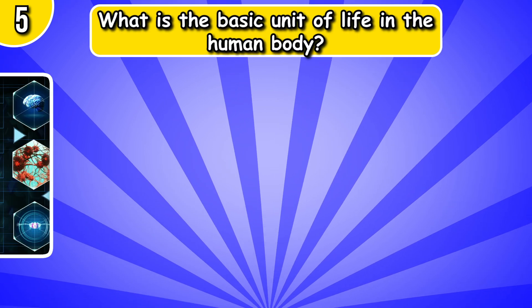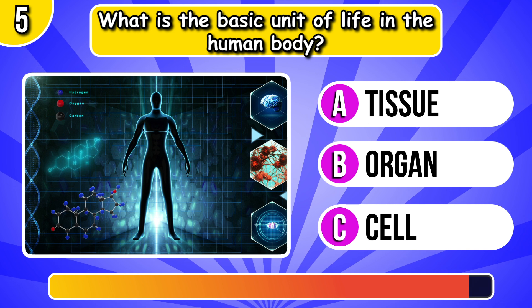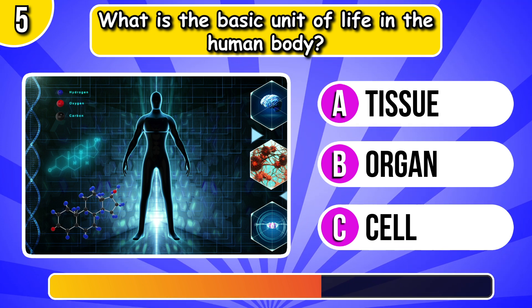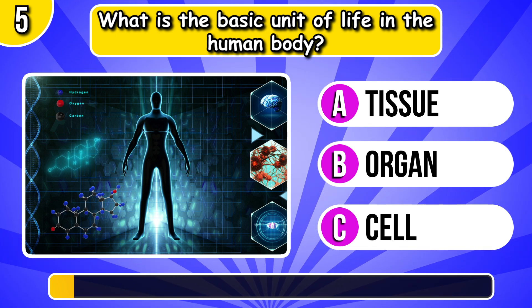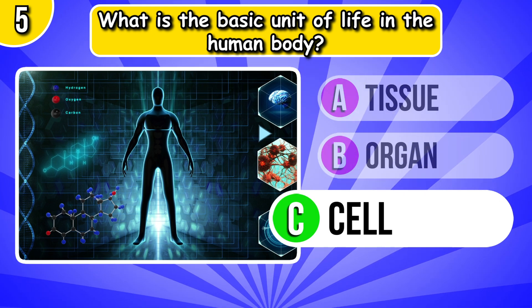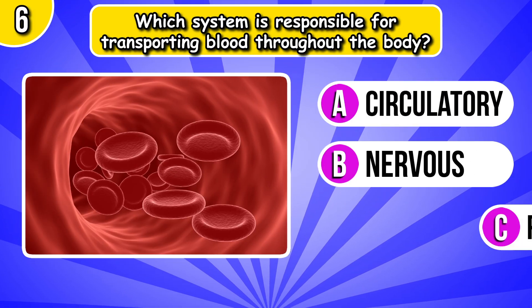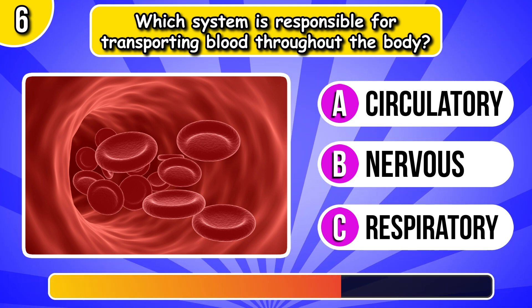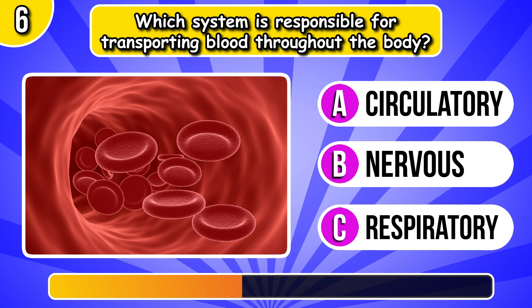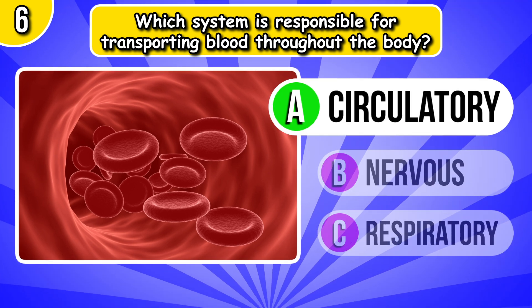What is the basic unit of life in the human body? It's cell. Which system is responsible for transporting blood throughout the body? It's circulatory system.